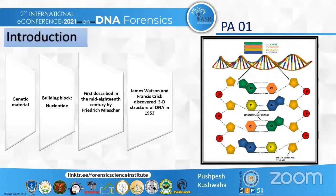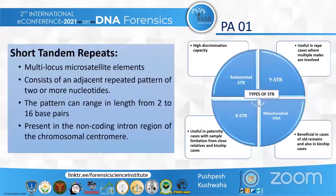We all know the basics of DNA, so we will start with STRs. STRs are simple short tandem repeats — generally repeats of two to five base pairs in length. They are of four types: autosomal, X-STR, mtDNA, and Y-STR.